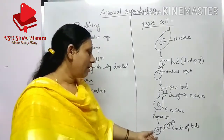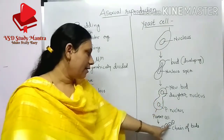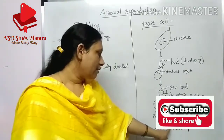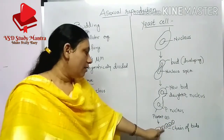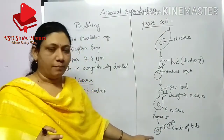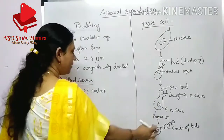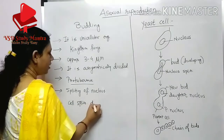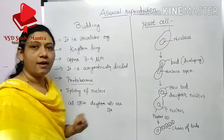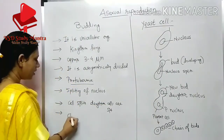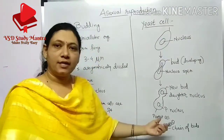Next, the cell becomes pinched and separates. Here you can see chains of buds formed. This is the parent cell and these are the daughter cells, which are much smaller than the parent cell. The daughter cells are separated, and a chain of buds is visible in the last stage of yeast cell reproduction.